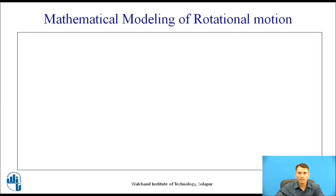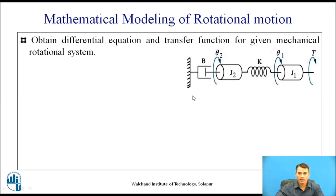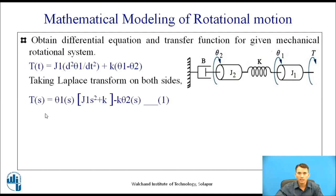Now, let us have one more example based on rotational motion. Obtain the differential equation and transfer function for a given mechanical rotational system. For inertia J₁, the torque equation is: T(t) = J₁·(d²θ₁/dt²) + k·(θ₁ − θ₂). Taking the Laplace transform gives us equation 1: T(s) = J₁s²·Θ₁(s) + k·[Θ₁(s) − Θ₂(s)].